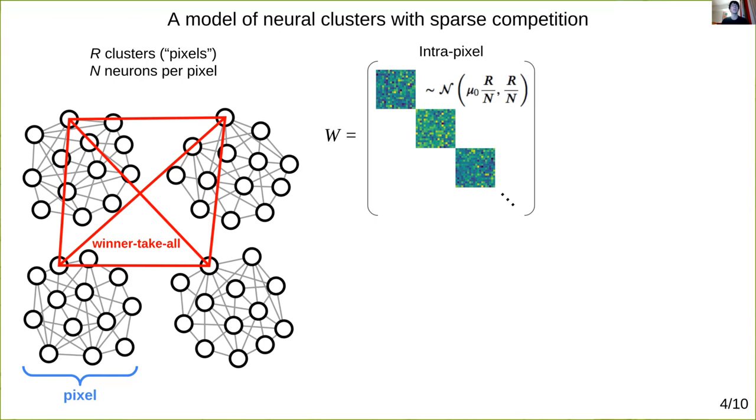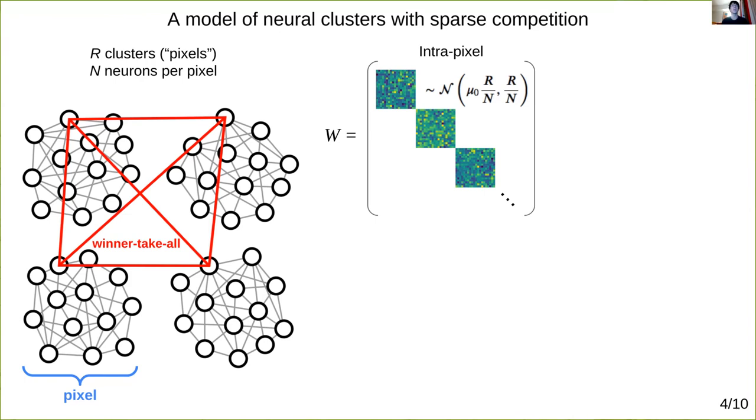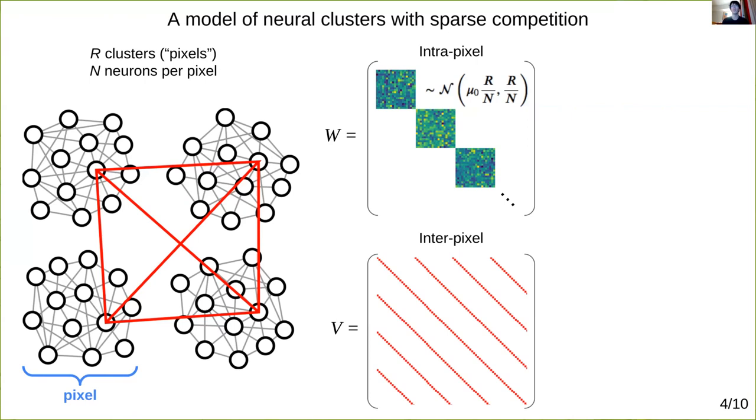Last, we're going to do something slightly funny and add winner-take-all games among small collections of neurons distributed across pixels. We'll assume for now there are n such competitions taking place, given by this matrix V, where each row of V is a set of R competing neurons, one from each pixel.